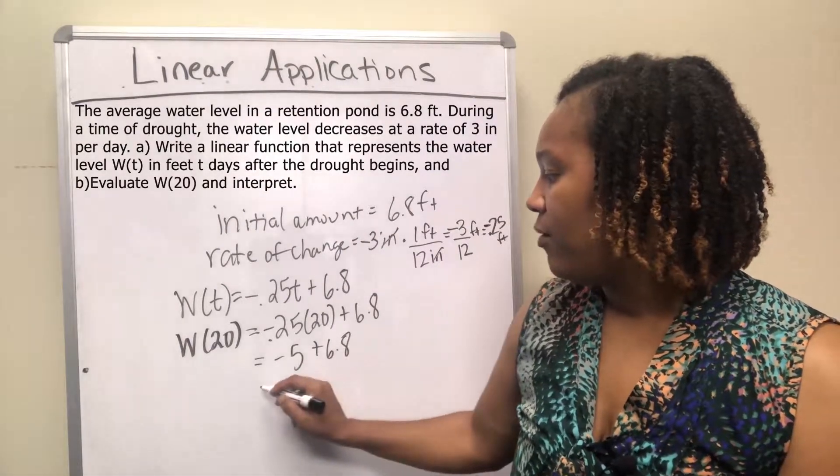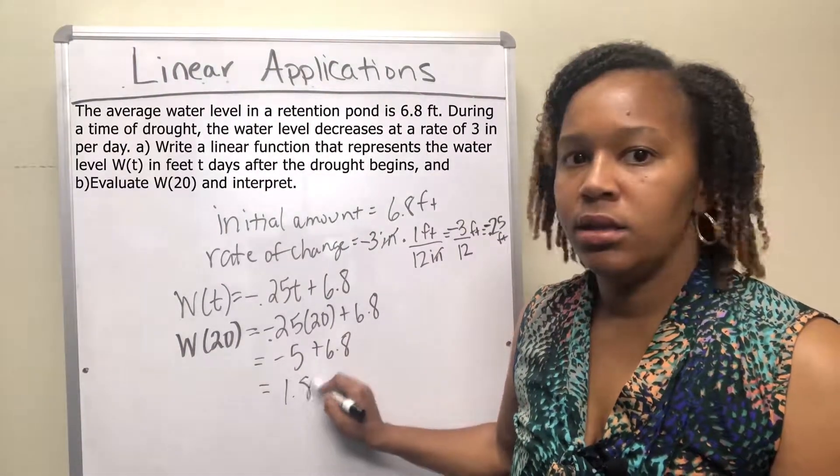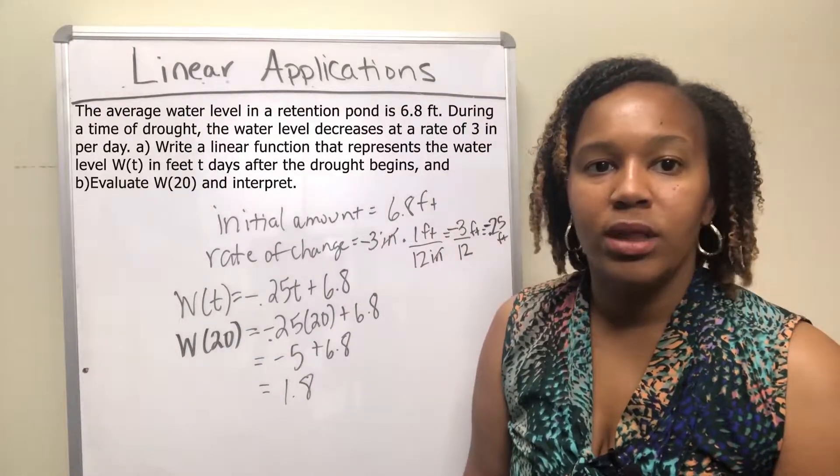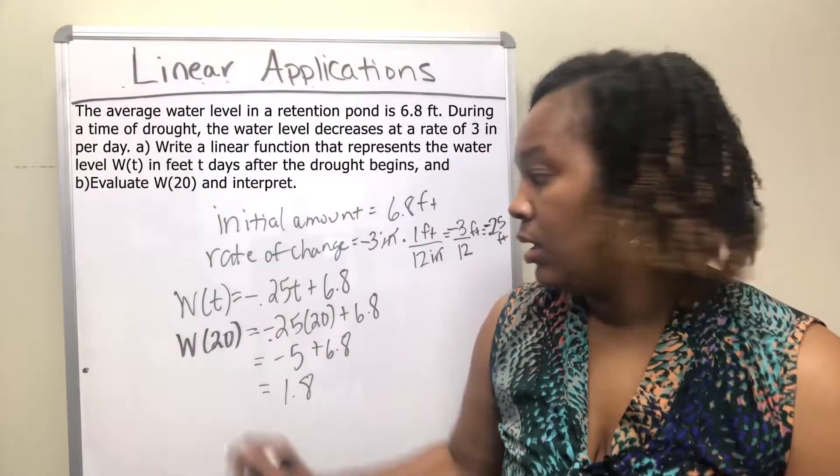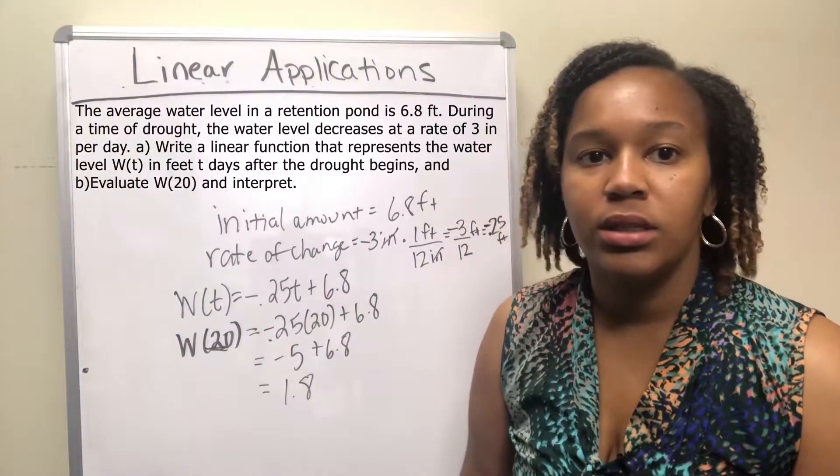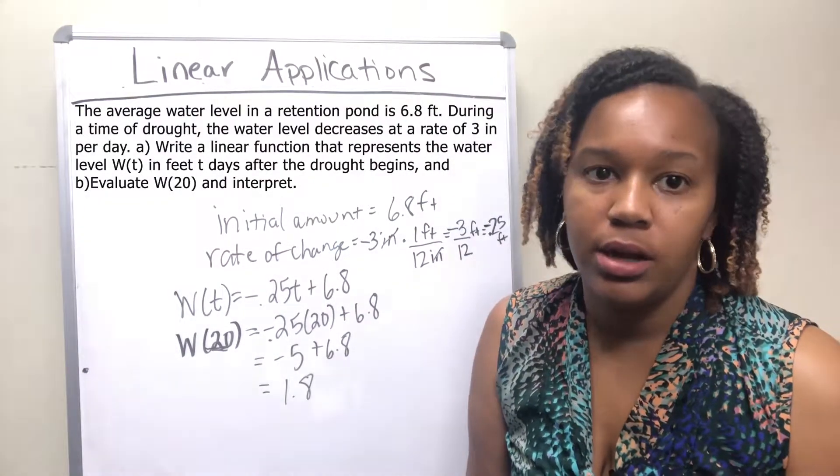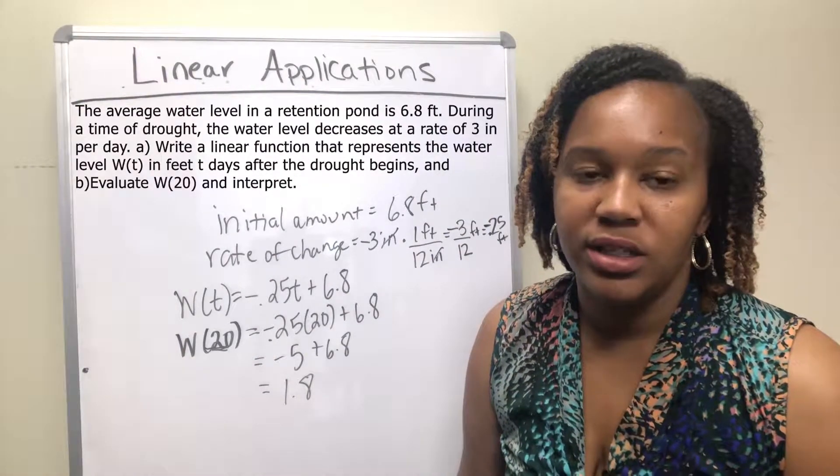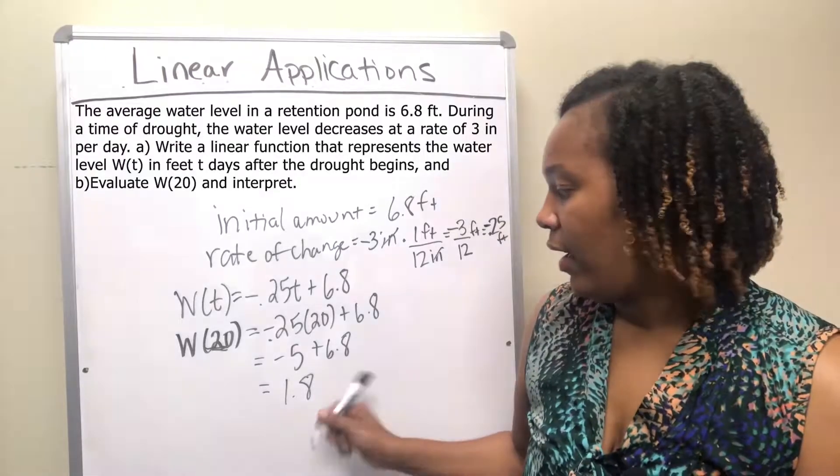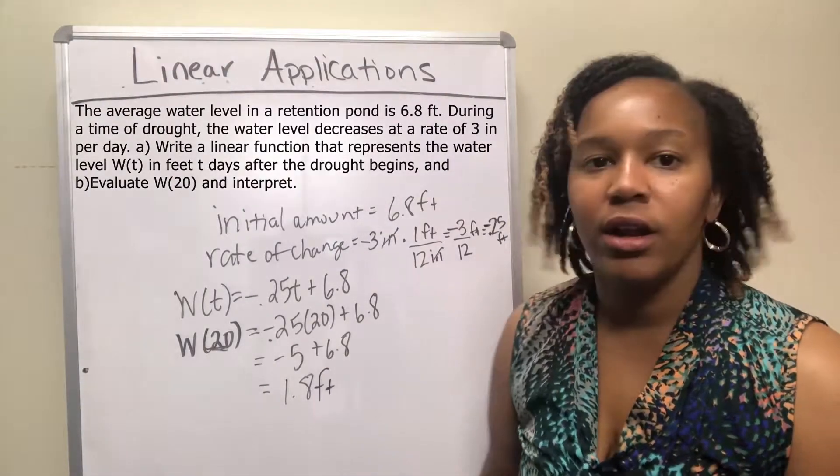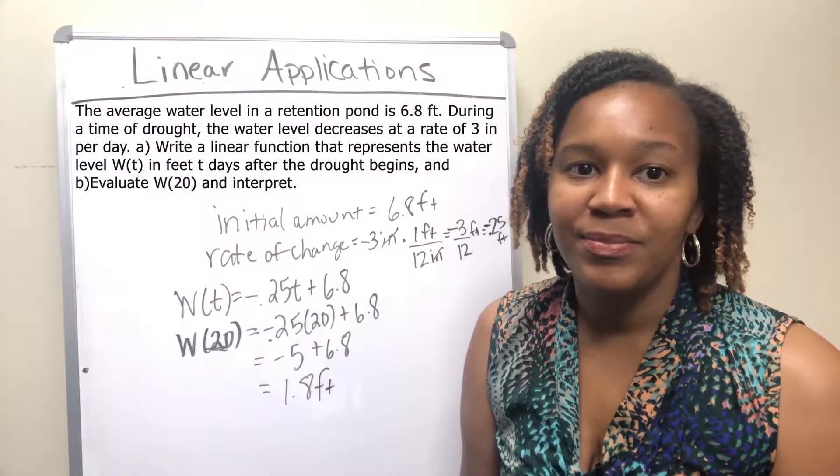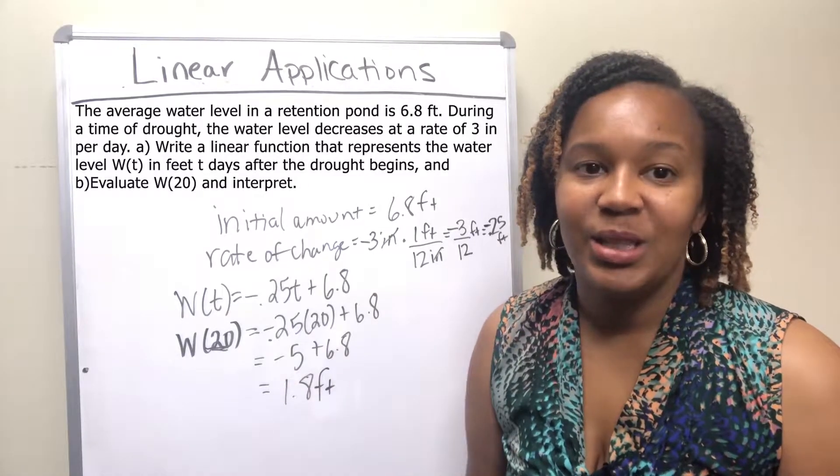Negative 5 plus 6.8 is 1.8. And so what that means is 20 days, since we replaced T with 20, that's the number of days after the drought has started. So 20 days after the drought has started, there's 1.8 feet of water left in the retention pond. And so that's how you work this linear application.